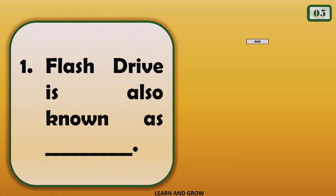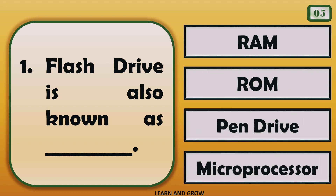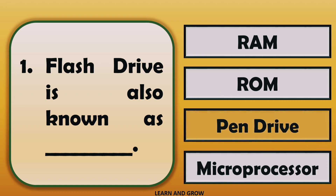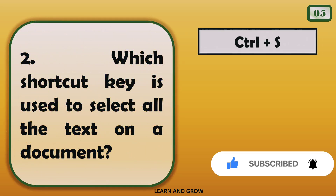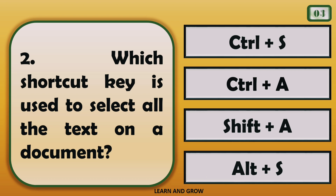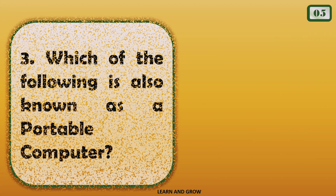Flash drive is also known as — the correct answer is pen drive. Which shortcut key is used to select all the text on a document? The right answer is Ctrl+A. Which of the following is also known as a portable computer?